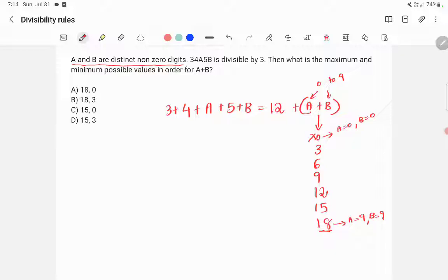So we can remove these two possibilities. So rest is 3, 6, 9, 12 and 15. So here minimum value is 3 and maximum value possible for A plus B is 15. So option D is the right answer.